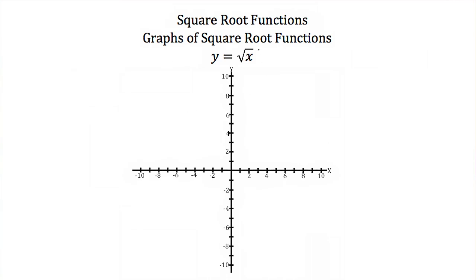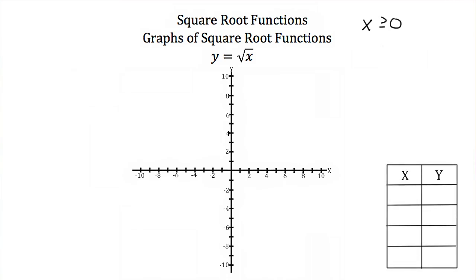Remember, the domain of y equals the square root of x is that x has to be greater than or equal to zero. So the values I pick for x in my table will be greater than or equal to zero. I'm going to pick ones that are easy to take the square root of: 0, 1, 4, and 9.